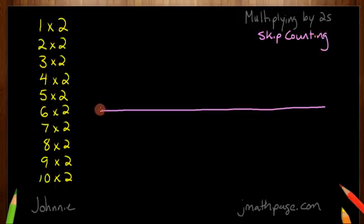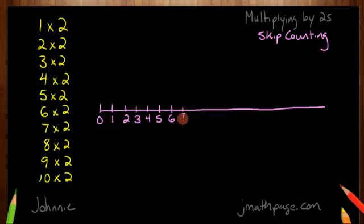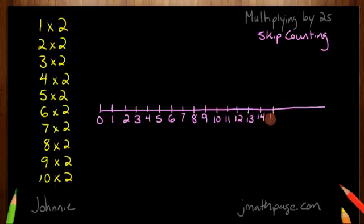I'm going to mark off this number line. I'll start with 0 — good place to start. And I'm going to number them off one by one. So 1, 2, 3, 4, 5, 6, 7, 8, 9, 10, 11, 12, 13, 14, 15, 16, 17, 18, 19, 20. Lucky for me, I had just enough line there.